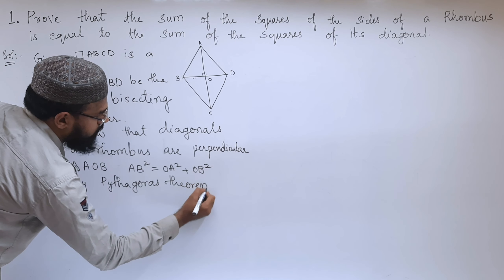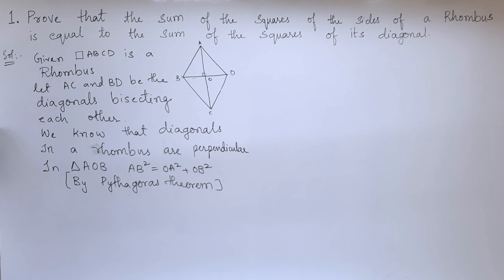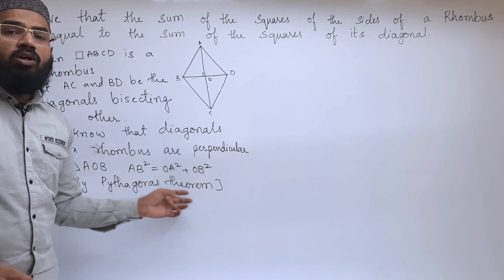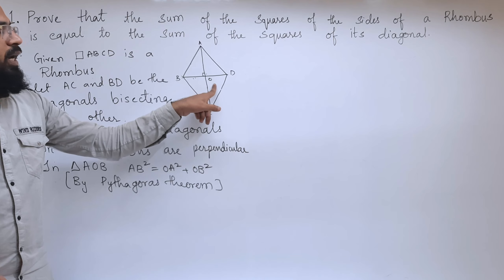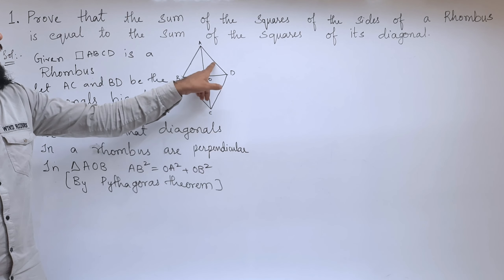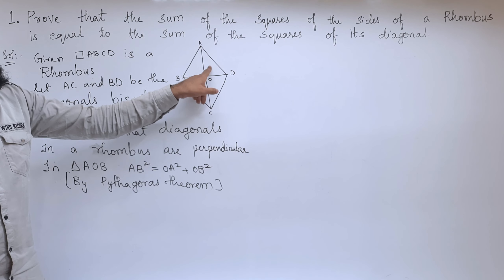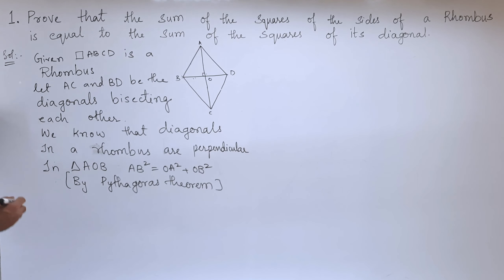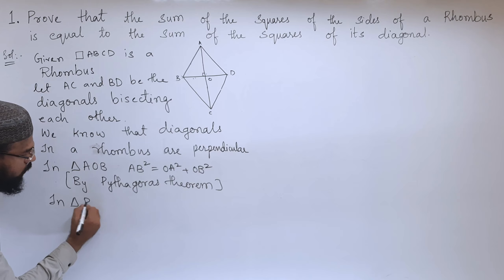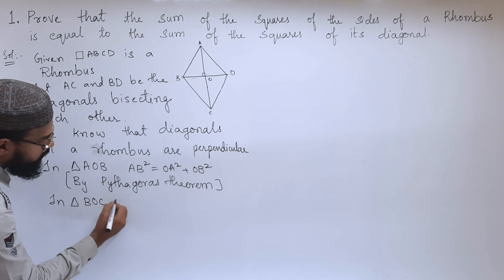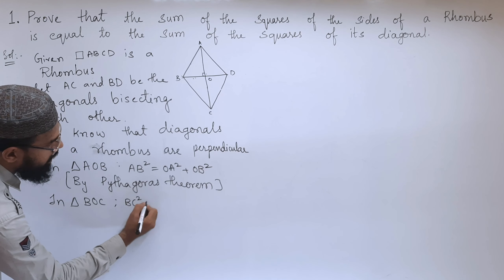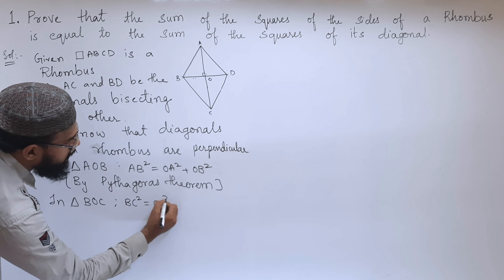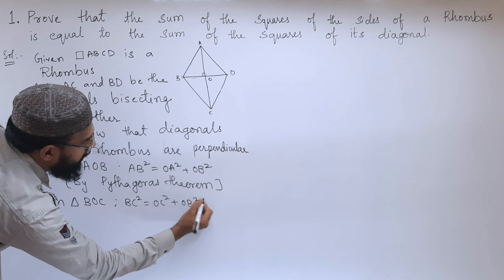Similarly, by using Pythagoras theorem, we can prove for the other triangles. In triangle BOC, we can write: BC² = OC² + OB².